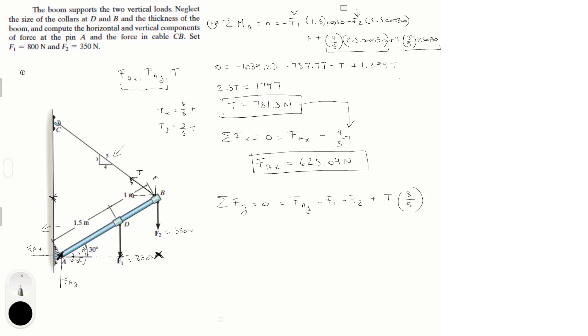So plugging T here, f1 you know that it's 800, f2 it's 350, so you plug in all those values. And you should get that fAy is equal to 681.22 newtons.